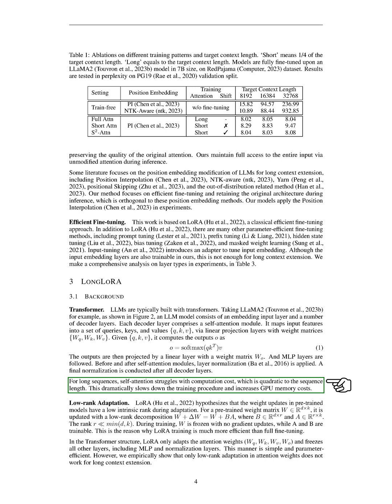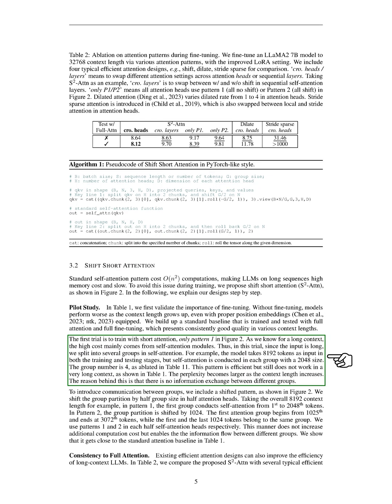To address this, we propose a method called shift short attention. This method avoids the high memory cost and slow computation of standard self-attention by splitting the input into several groups in the self-attention module. We also introduce a shifted pattern to allow for communication between groups. This does not increase the computation cost but enables information flow between different groups, and we found that this approach gets close to the standard baseline.